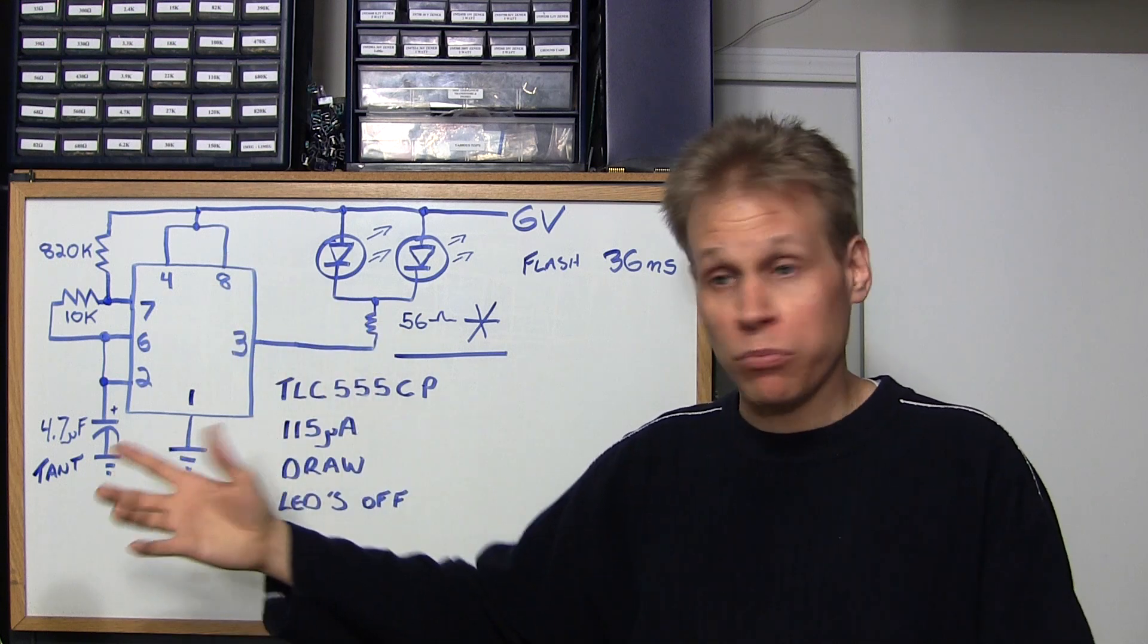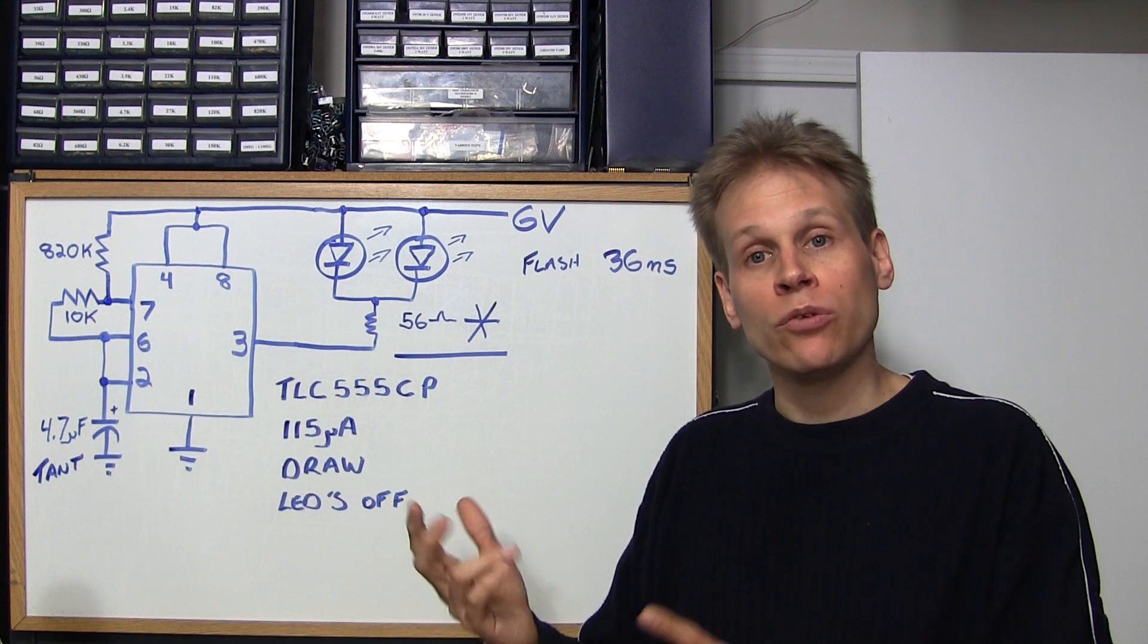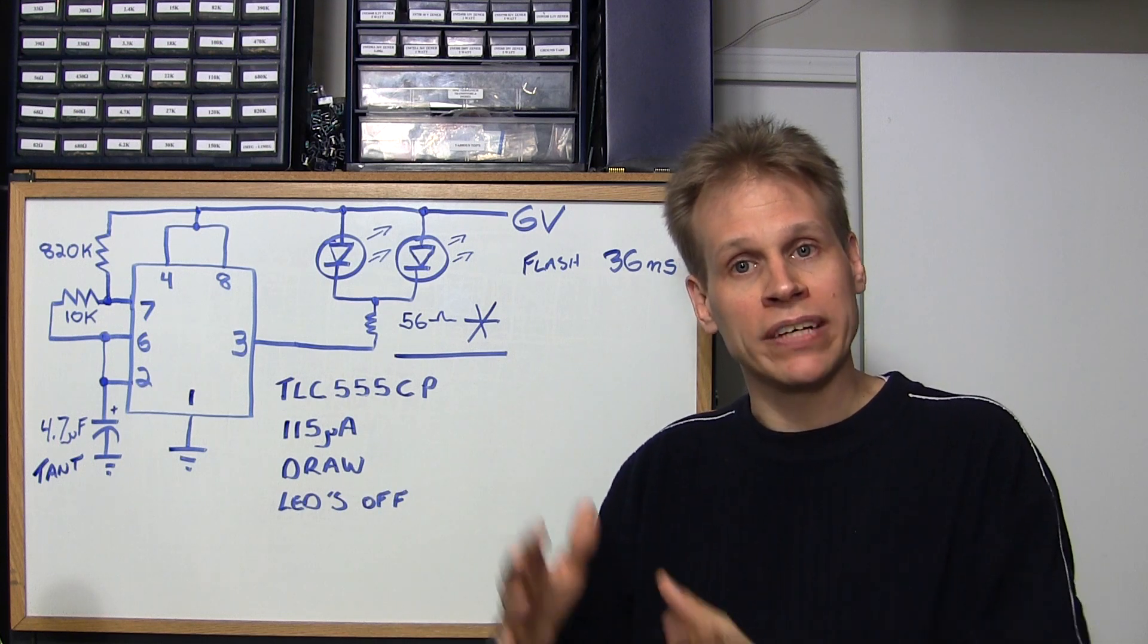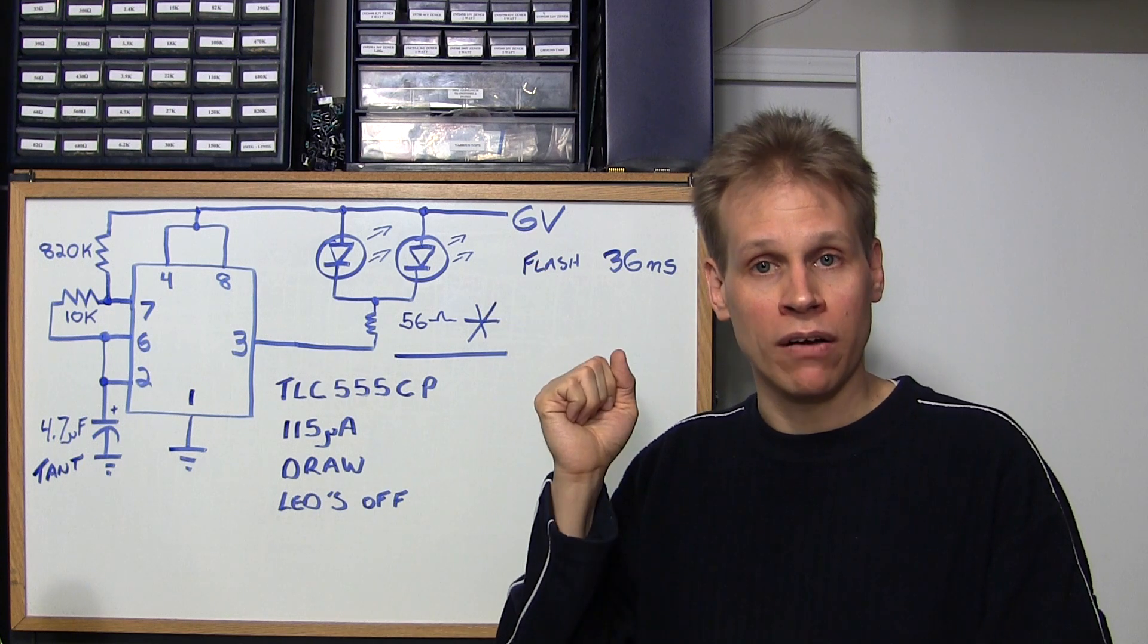If you were to say for example take this 10k resistor and change it to say 33k, you would take that strobe effect and basically change it to more of an incandescent kind of flash on the top of a tower. It would come on and then go off.